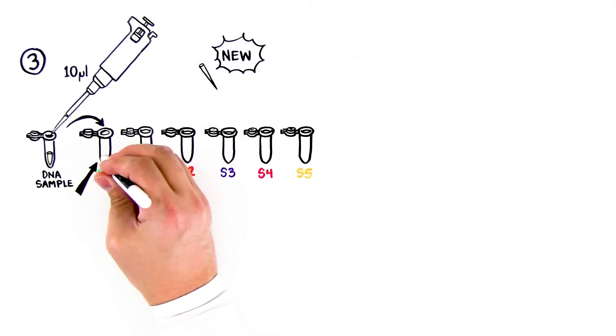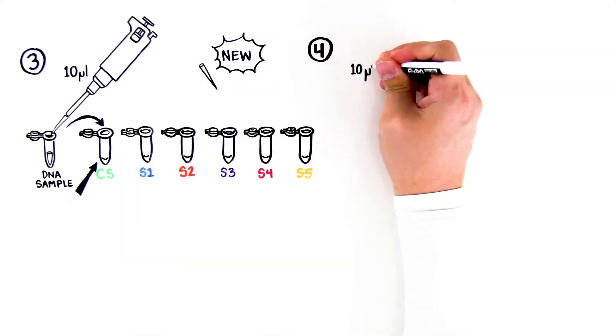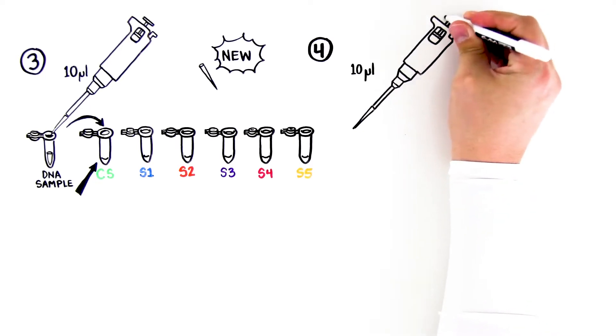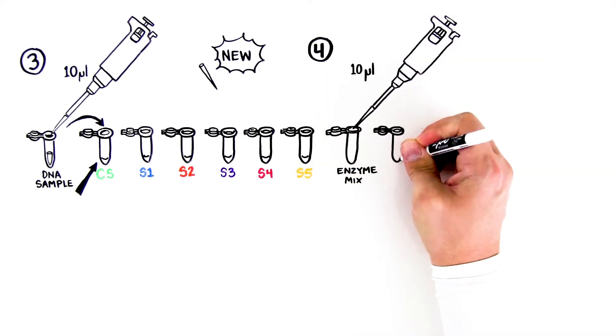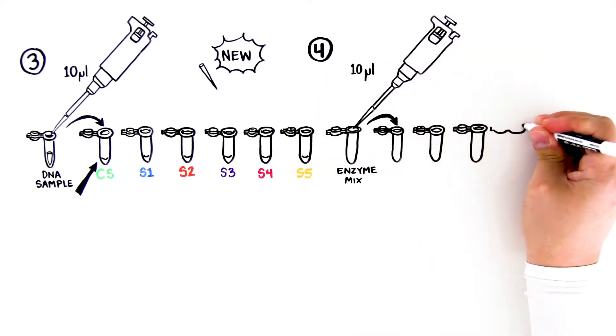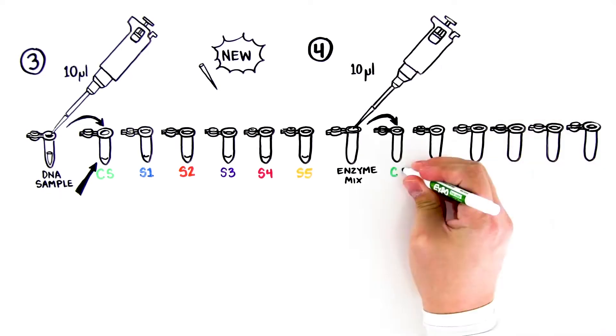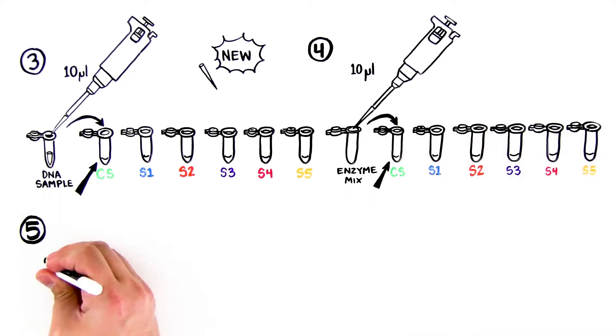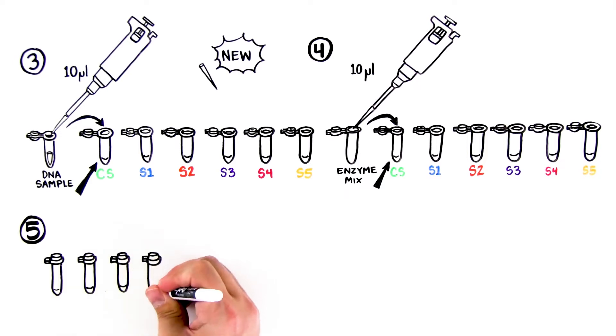Fourth, pipet 10 microliters of enzyme mix ENZ to the very bottom of each tube. Use a new tip for each ENZ sample. Fifth, cap the tubes and mix the components by gently flicking the tubes with your finger.